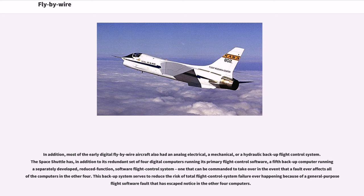Most early digital fly-by-wire aircraft also had an analog electrical, mechanical, or hydraulic backup flight control system. The Space Shuttle has, in addition to its redundant set of four digital computers running its primary flight control software, a fifth backup computer running a separately developed, reduced-function software flight control system that can be commanded to take over in the event of a fault in the other four, reducing the risk of total flight control system failure from a general purpose flight software fault.